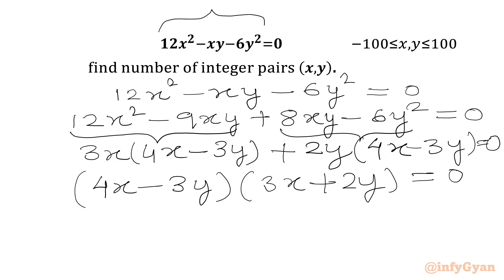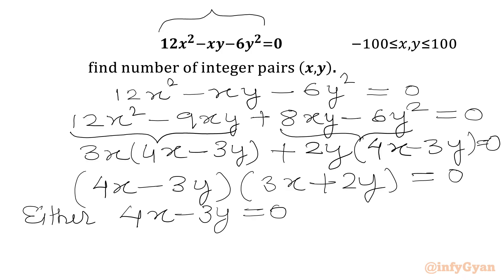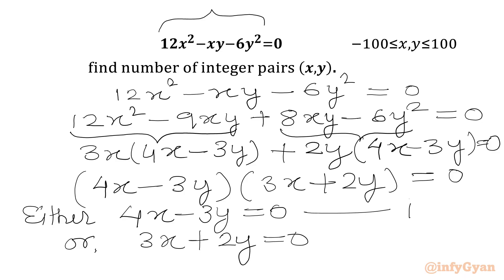Now we will use the product zero rule. So we can write either 4x minus 3y equals 0 — let's call this equation 1 — or 3x plus 2y equals 0 — let's call this equation 2. We have to solve both equations one by one.